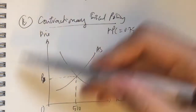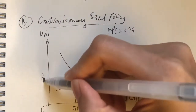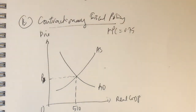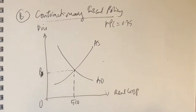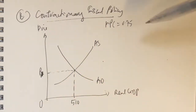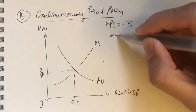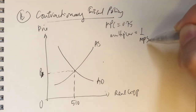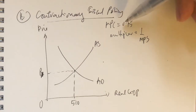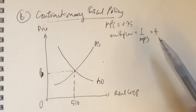We begin by sketching our problem first. This is the initial condition — no problem. Here is P1, and this is 510 billion. So this is our starting point. I took all these figures from the textbook, and our economy has an MPC of 0.75. This is given so we can calculate our multiplier. Remember, multiplier is 1 over MPS. MPS is 1 minus MPC, so 1 over 0.25 equals 4.